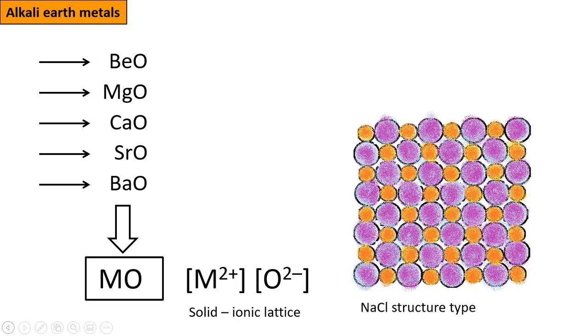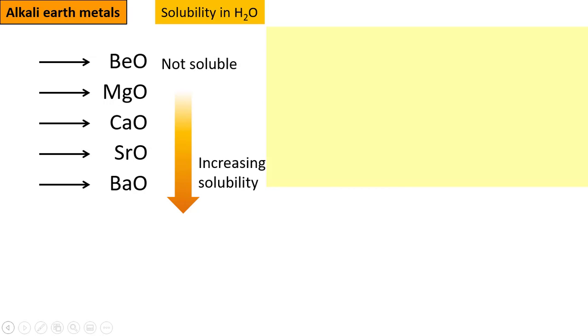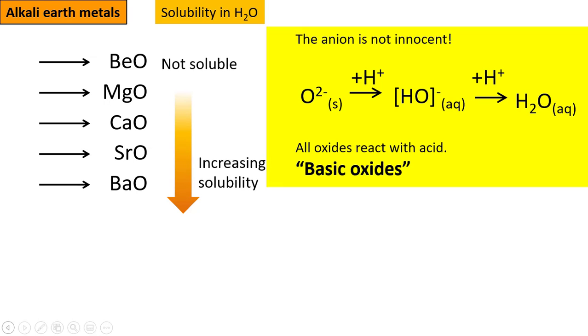Although these compounds are ionic, they are not universally soluble in water. That is in part because of the stability of the oxide structure. However, they do dissolve more readily as you descend the group. But this dissolution is again driven by the reactivity of the oxygen counter-ion. When they dissolve, they react to form hydroxide. Hence the name, alkali earth elements.